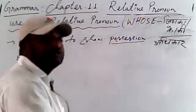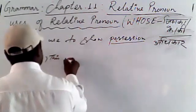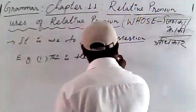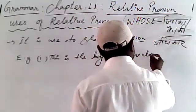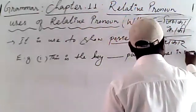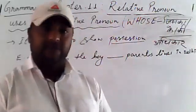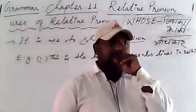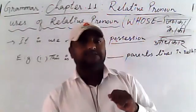Let me write down the example. The example is: this is the boy — dash — parents live in Delhi. To show possession of a noun, we use apostrophe s.